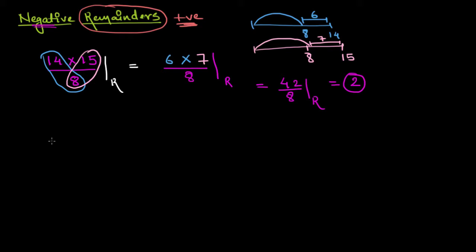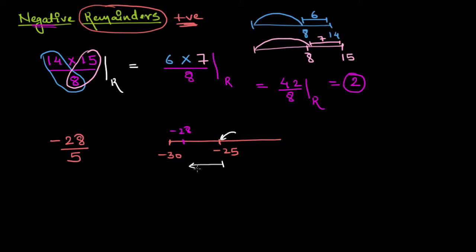For example, let's say I have negative 28 and I need to divide this by 5. There are two approaches. I can either reach negative 25 — and since negative 28 lies beyond that, I need negative 3 more, so negative 3 can act as my remainder. Or I can reach negative 30 and add 2 to come back to negative 28, making positive 2 my remainder. Since remainders are always positive by formal definition, I will consider positive 2 as my remainder and not negative 3.